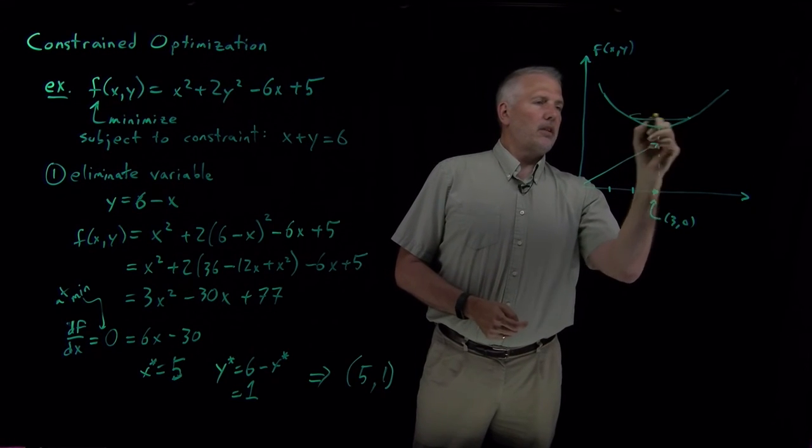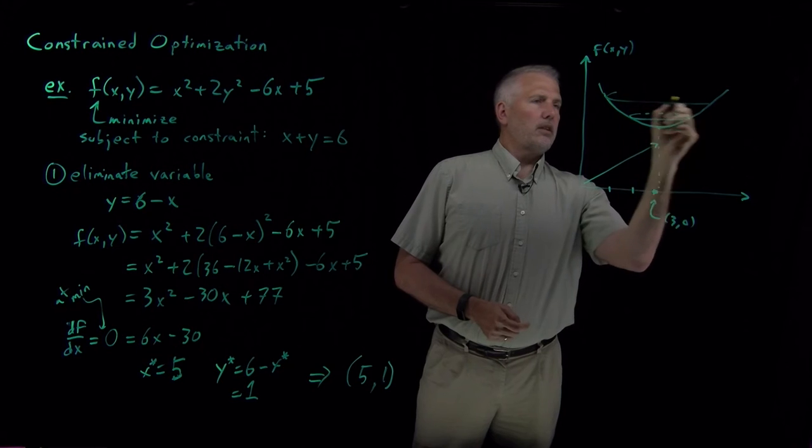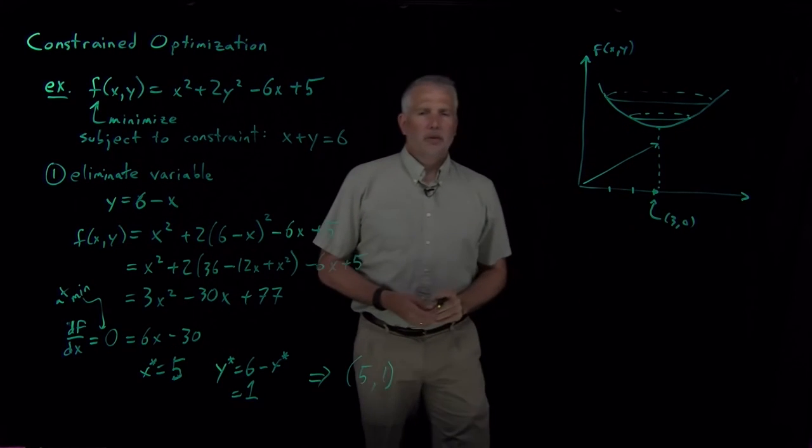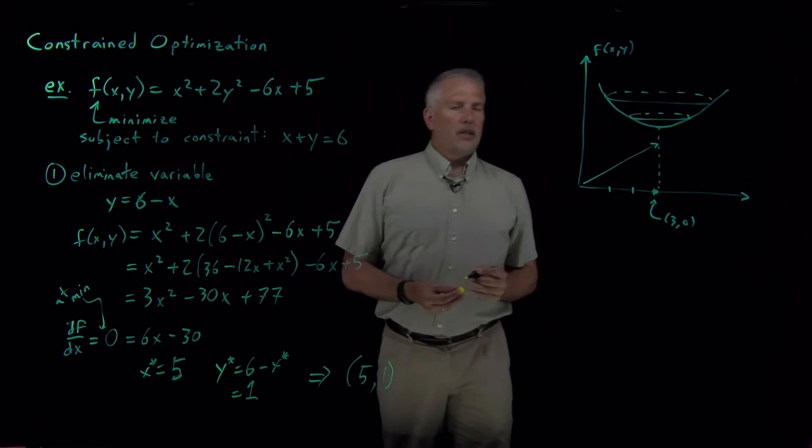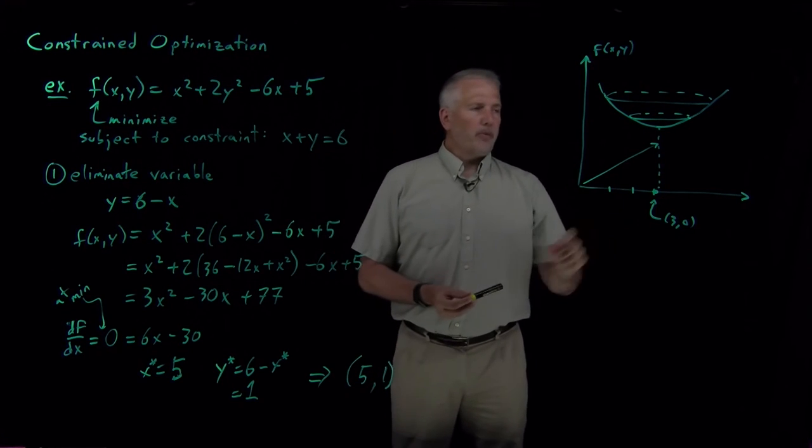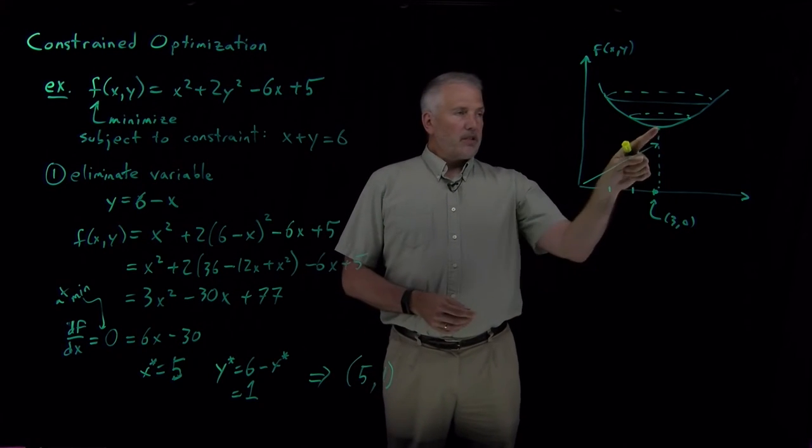...this function has a minimum. So it's a parabolic function that has a minimum directly above 3, 0.